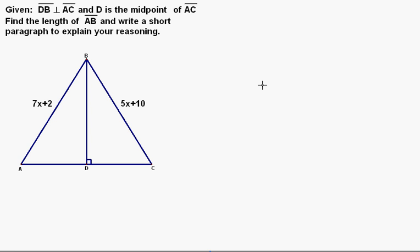Given line segment DB is perpendicular to line segment AC and point D is the midpoint of line segment AC, find the length of AB and write a short paragraph to explain your reasoning.